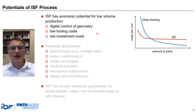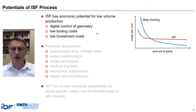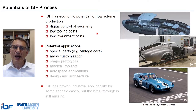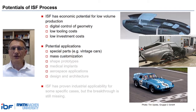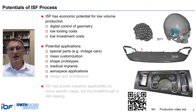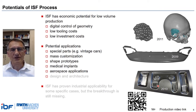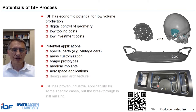We all know that incremental sheet forming has economic potential for low volume production, especially due to the low tooling costs and lower investment costs. And we also know the potential applications, like the historical racing car on the right-hand side, of which we have produced several variants. Other applications may be like shape prototypes, like medical implants, or aerospace applications, which can be produced in a fully integrated process. You may watch this process later following the production video link here, if you like.